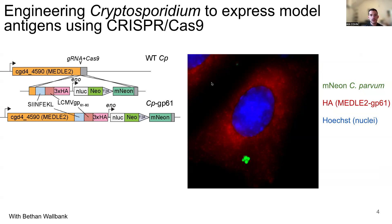one that expresses the 2W1S model antigen, which is the target of endogenous T-cells in B6 mice, and the LCMV GP61-80, or GP61 antigen, which is the target of TCR transgenic T-cells from SMARTA mice. As you can see here, when host cells get infected with these transgenic strains in vitro, cryptosporidium shown in green exports the Metal 2 model antigen fusion protein shown in red into the cytoplasm of infected host cells.